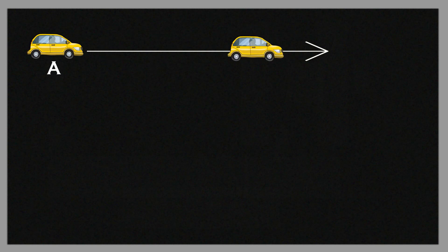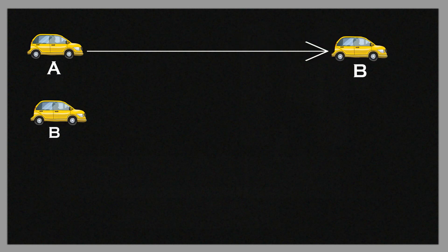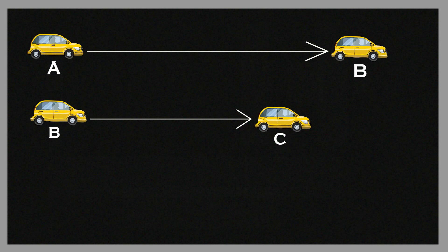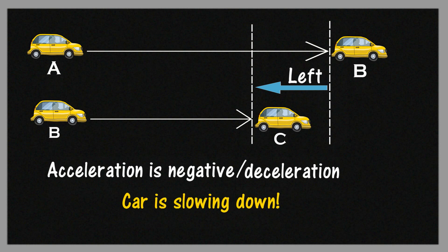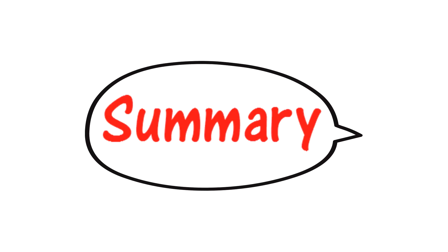Yes — in the case where a car moves from point A to B, and from B to C the speed of the car is decreasing: the change in velocity is towards the left, acceleration is negative, and the car is slowing down — so acceleration is deceleration. Therefore, deceleration may mean the car is slowing down, or it may mean the car is speeding up, depending on the direction.